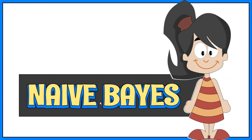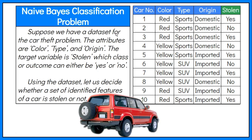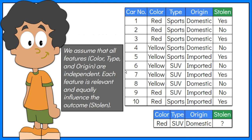To demonstrate how the formula is used, suppose we have a dataset for the car theft problem. The attributes are color, type, and origin. The target variable is stolen, which can either be yes or no. Using the dataset, let us decide whether a set of identified features of a car is stolen or not. We assume that no features are dependent — for example, the color of the car has nothing to do with its type or origin. We also assume each feature is equally influencing the outcome. Given the features of the car which are red, SUV, and domestic, let's classify whether the car is stolen or not.